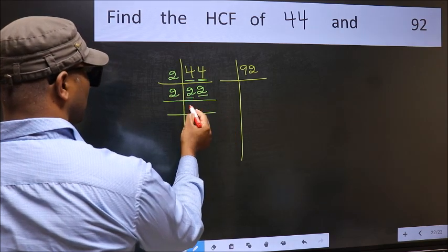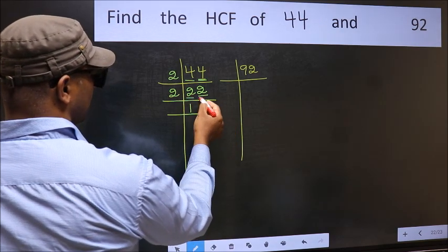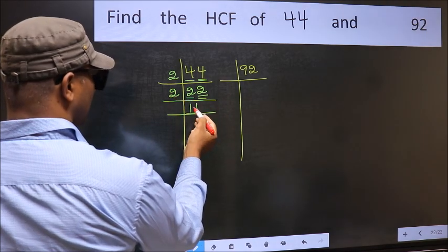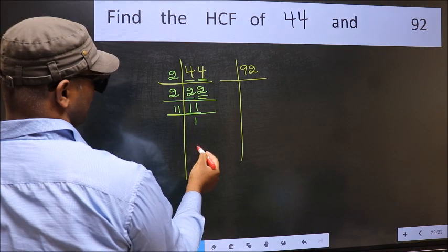First number 2: when do we get 2 in the 2 table? 2 times 1 is 2. The other number 2: 2 times 1 is 2. Now 11 is a prime number, so 11 times 1 is 11.